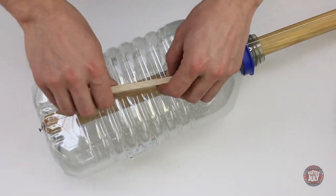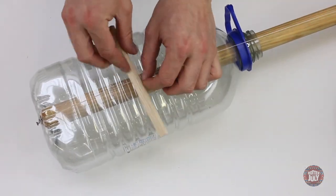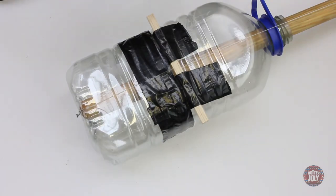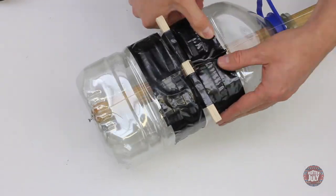To tension the string properly, I've wrapped a piece of wood around it, then firmly secured this to the body with some gaffer tape. At this stage the instrument should be making a decent sound.